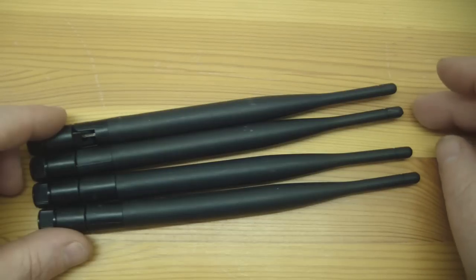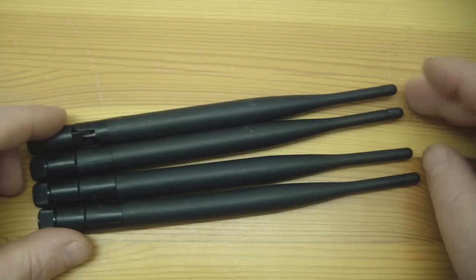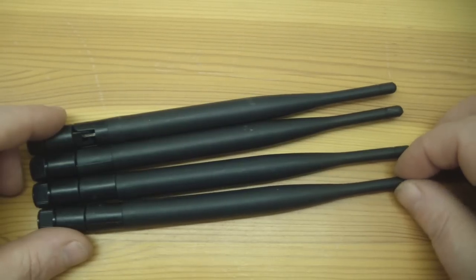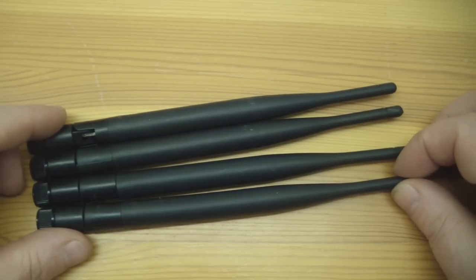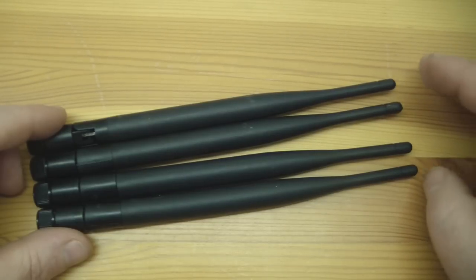Those particular routers are dual band, 5 GHz and 2.4 GHz, and they have 5 antennas. They've got 3 for the 5 GHz and 2 for the 2.4 GHz.